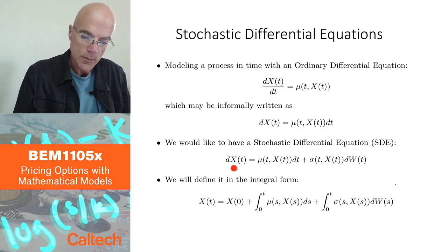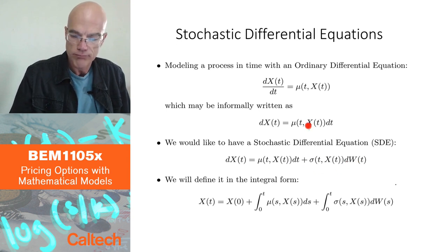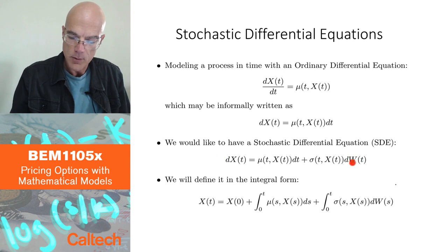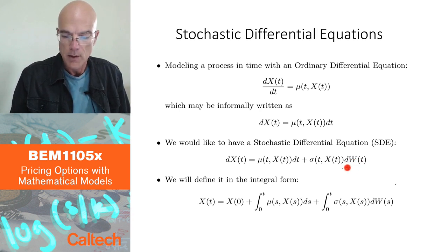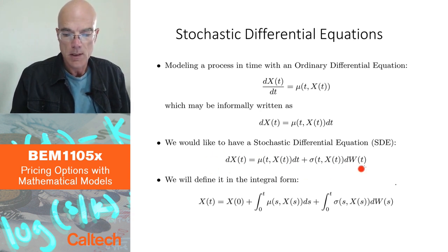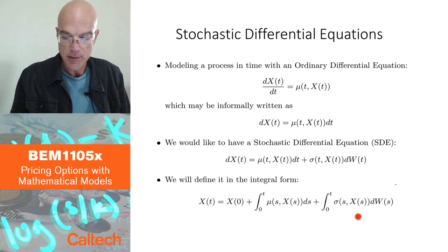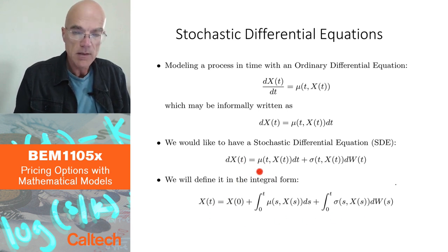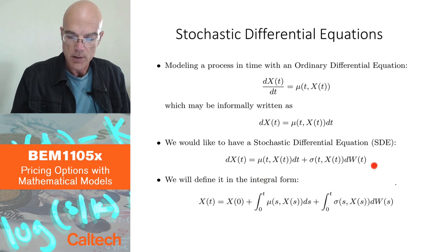We don't really know what this means right now. I just kind of did some informal thing by moving this dt here, adding a random term. It's not quite clear what this means. In particular, we still have a problem that we don't know what this dW means if W doesn't have a derivative with respect to time. But we are not going to take a derivative with respect to time of W. Instead, we are going to think of this notation here as actually meaning this.